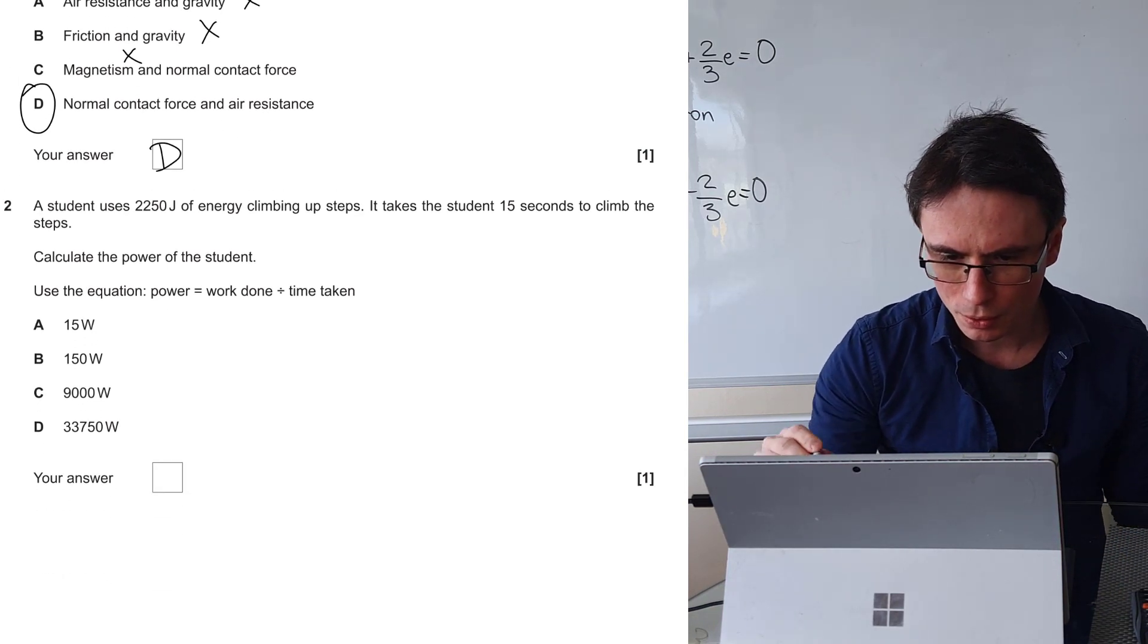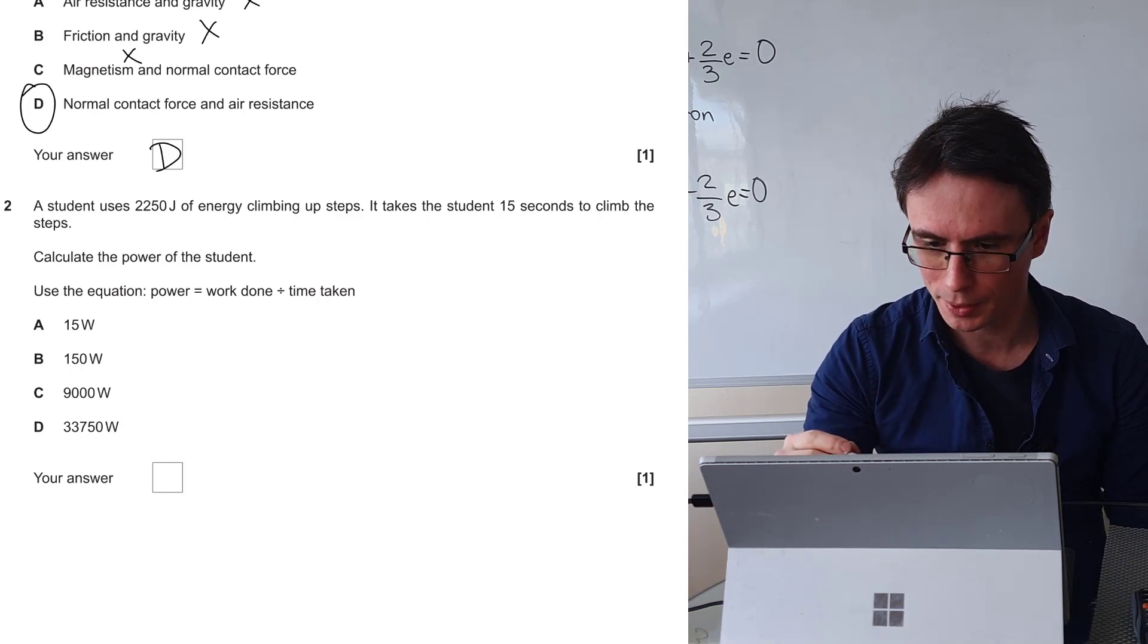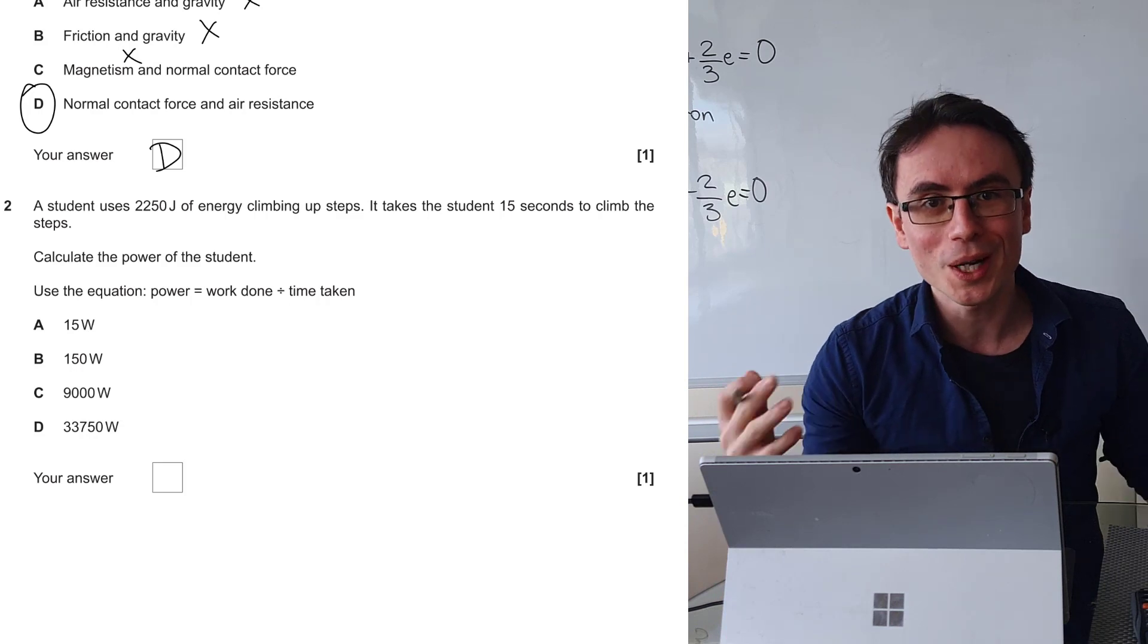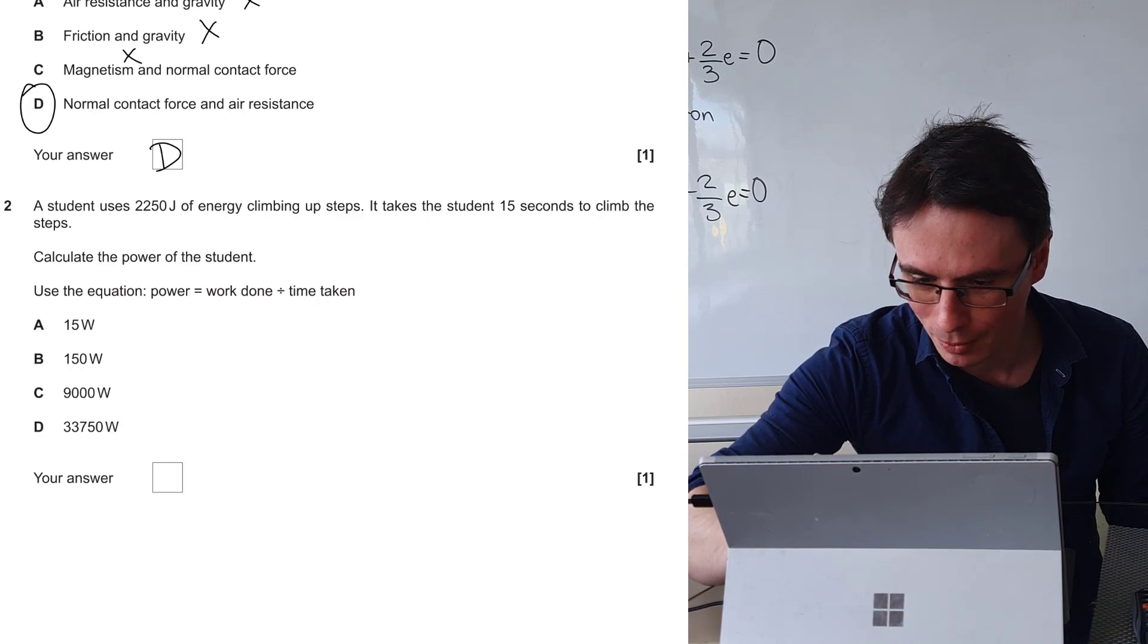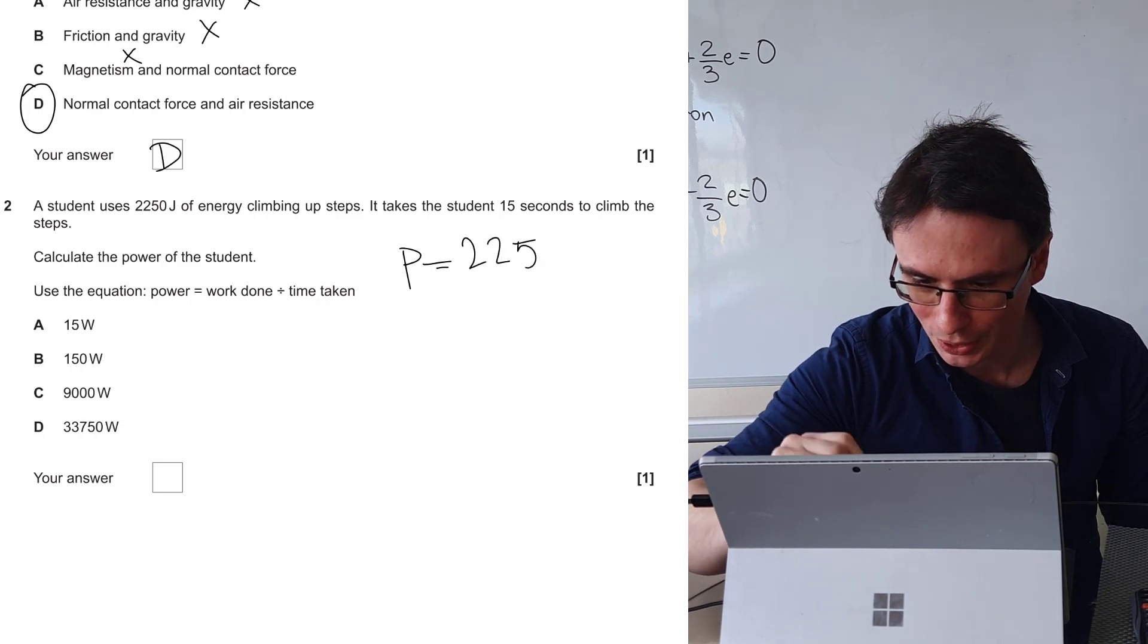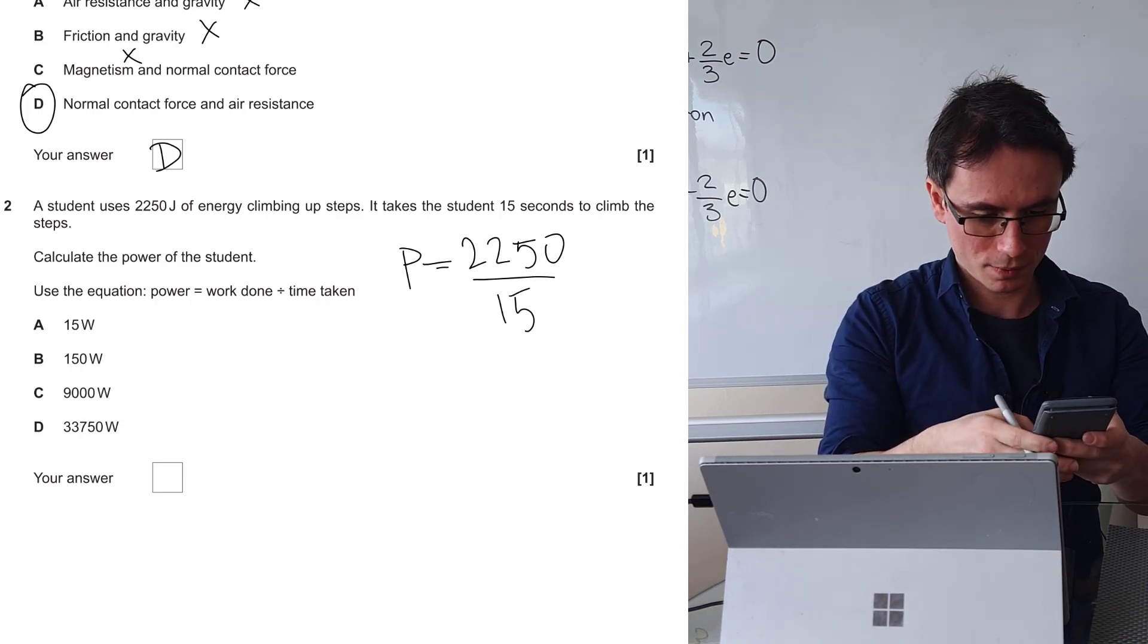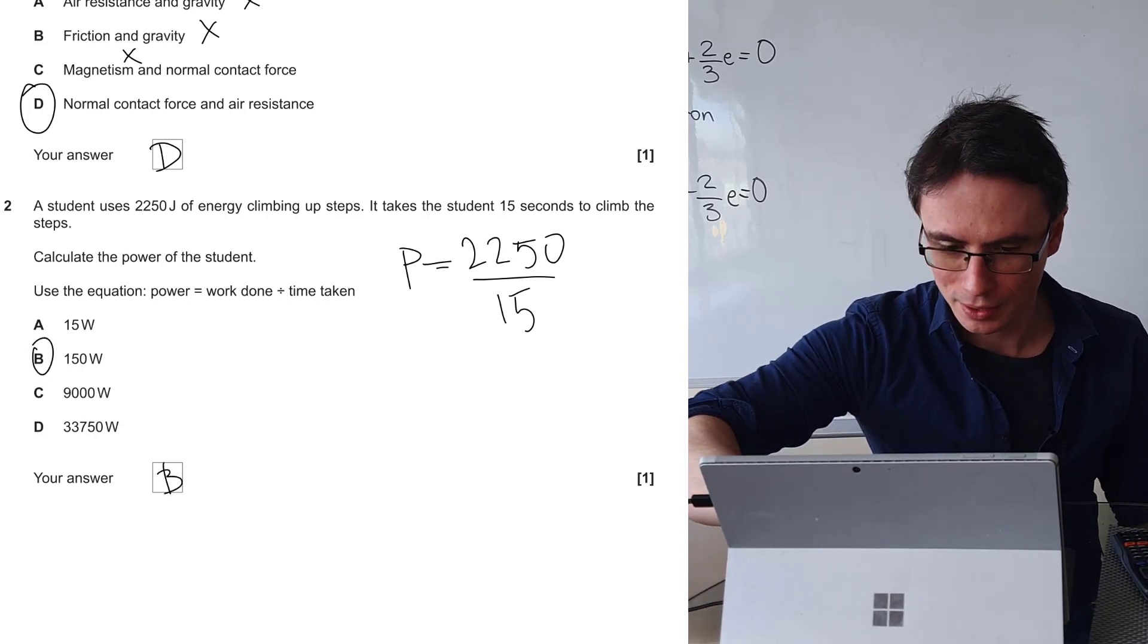Question two. A student uses 2250 joules of energy climbing up steps. It takes 15 seconds to climb the steps. Calculate the power of the student. We're even given the formula. Remember, work done is equal to the energy provided. So the power is simply the energy, which is 2250, divided by the time taken, which is 15 seconds. So 2250 divided by 15 is 150 watts. The correct answer is B.